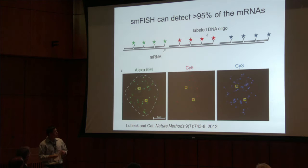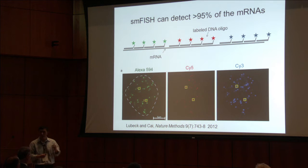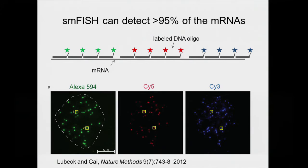The single-molecule FISH method is highly accurate. We targeted a single transcript with three sets of probes, each labeled with a different color. When we image a single cell, almost all the dots in the three channels co-localize — the same spatial pattern is recapitulated in all three channels. This tells you there are very few false positives and very few false negatives, because if there were many false negatives you would expect some dots to appear in only one channel. In fact, most dots appear in all three channels.